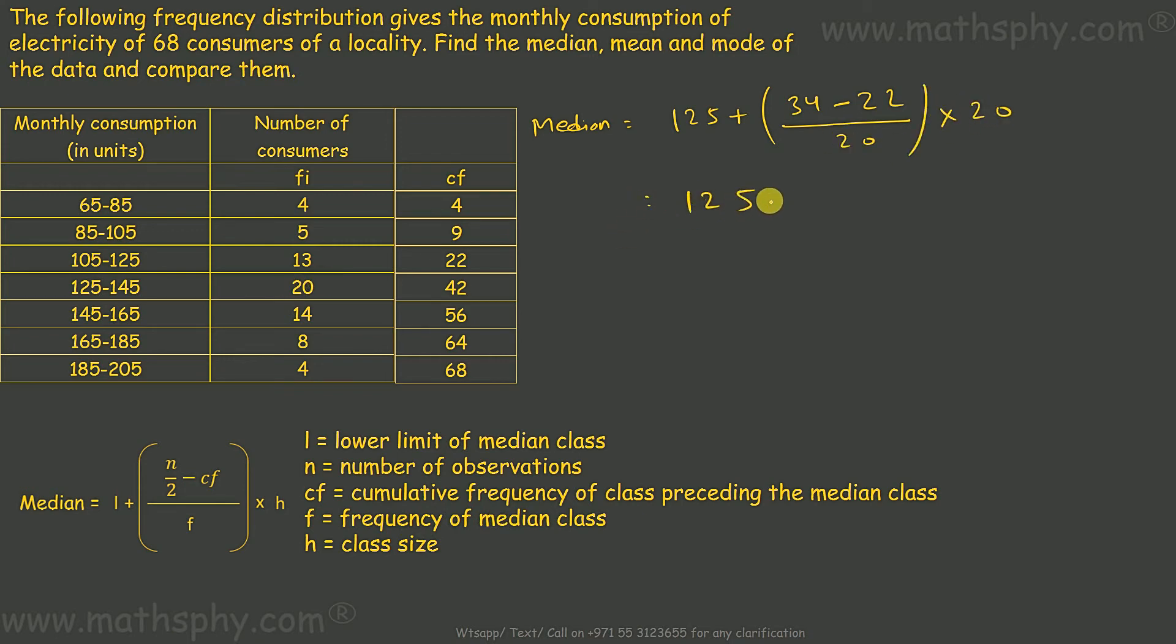Simple: 125 plus 34 minus 22 gives you 12, 12 over 20 into 20. So 125 plus 12 gives you 137. So 137 units is the median for this data.